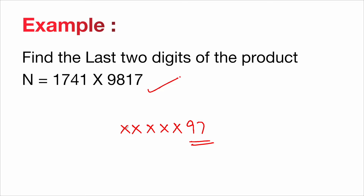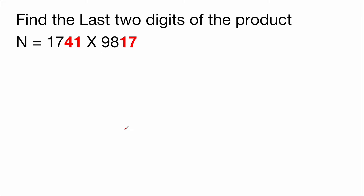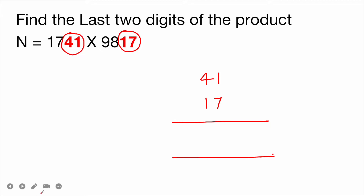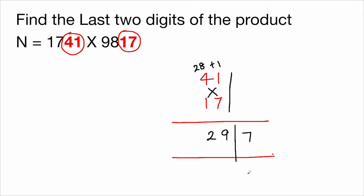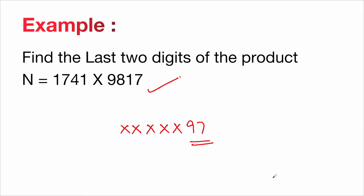Without a calculator, focus only on the last two digits of each number: 41 and 17. Use the X and I pattern. I = product of unit digits = 1×7 = 7. X = cross-multiplication summation = 4×7 + 1×1 = 28+1 = 29. So the last digit is 7 and the second last digit is 9, giving the answer 97.